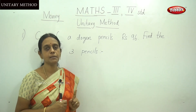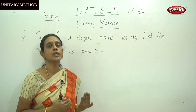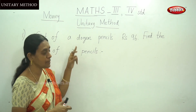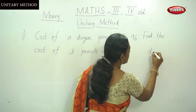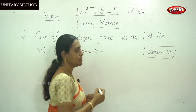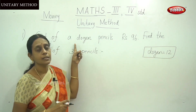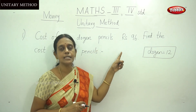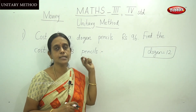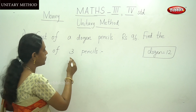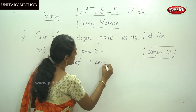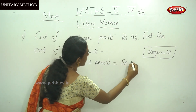You know the term — a dozen means the number equal to 12. So here, the cost of 12 pencils is given as 96 rupees. The first step in this sum is to find the cost of each pencil. Cost of 12 pencils is equal to rupees 96.